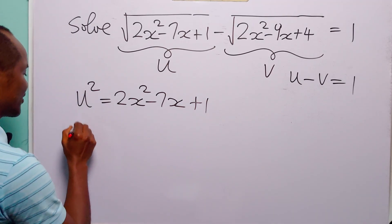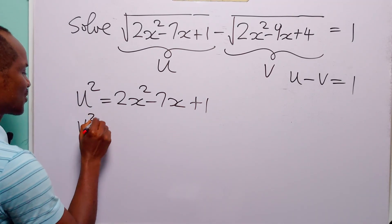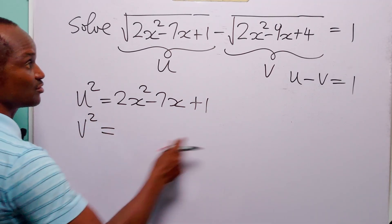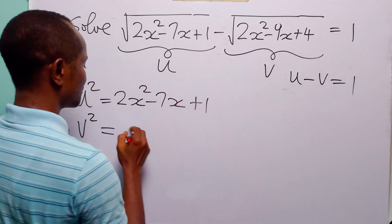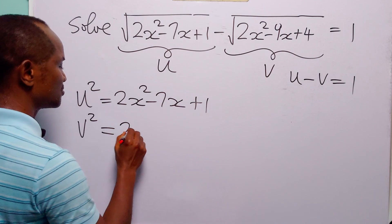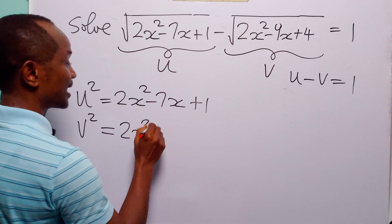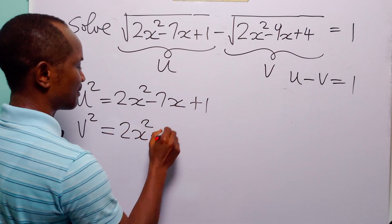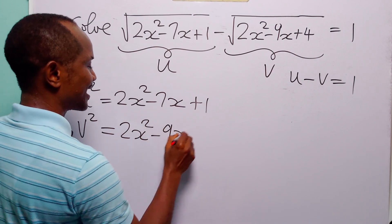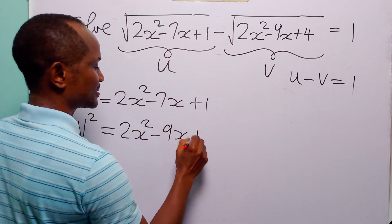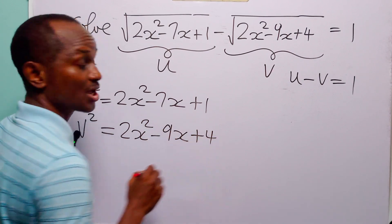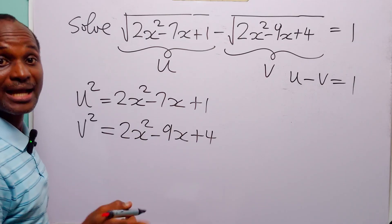And we have 2x squared minus 7x plus 1. In the same way, v squared is going to be equal to 2x squared minus 9x plus 4.